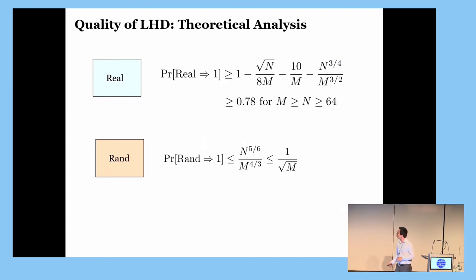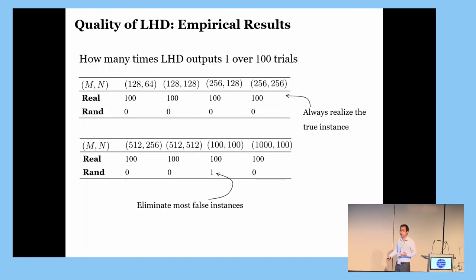So, theoretically, in the real world, we output correctly with probability at least 0.78, when M and N are greater than 64. And the bigger M and N are, the better. In the random world, then the chance that we output incorrectly is at most 1 over square root of M as required. But let me stress that these theoretical estimations are very, very conservative, and empirically, we do much better. Experiment shows that in the real world, we always output correctly. In the random world, then we might output incorrectly, but that happens very rarely.